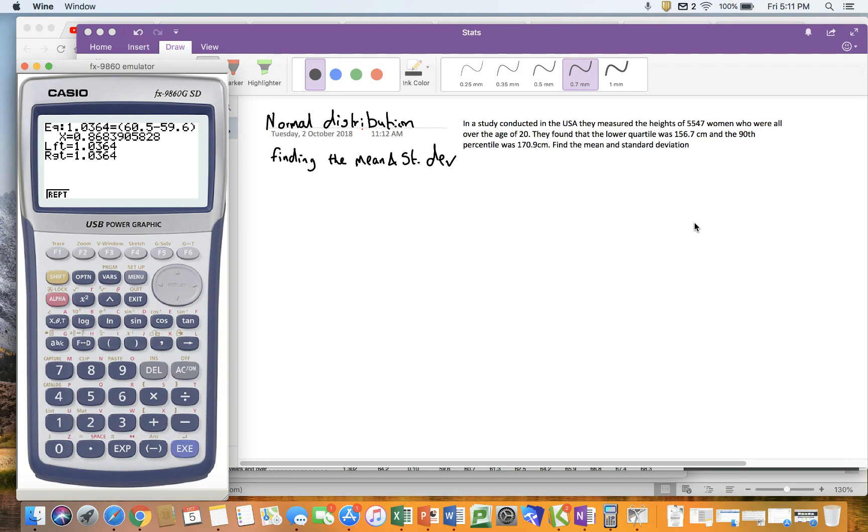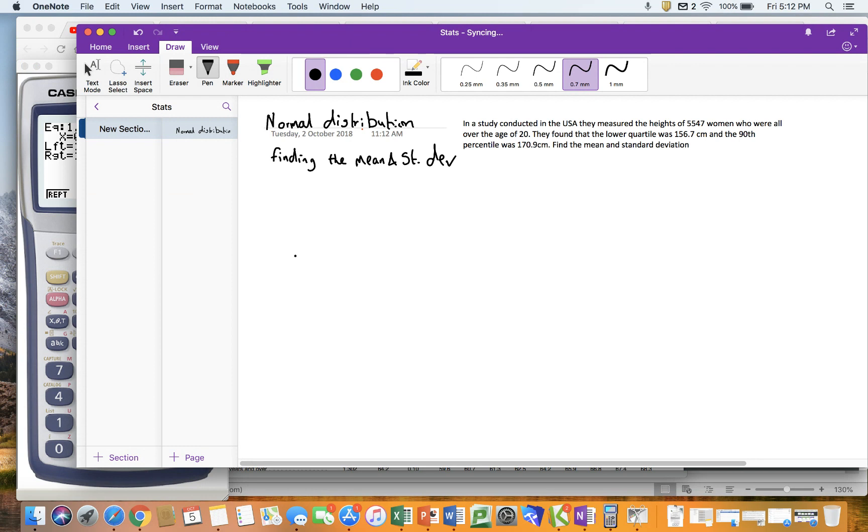I'll trust their data. It seems like good secondary data. Now, all the women were over 20, so we'd expect most of their growth will have taken place. When they found that their lower quartile was 156.7 centimeters and their 90th percentile was 170.9 centimeters, that's the information I'm going to use to work out my normal distribution, and I need to find the mean and standard deviation.